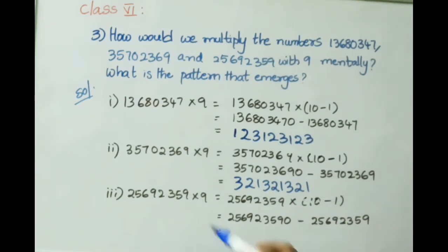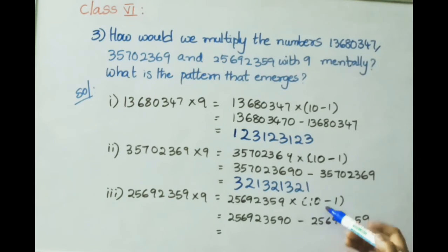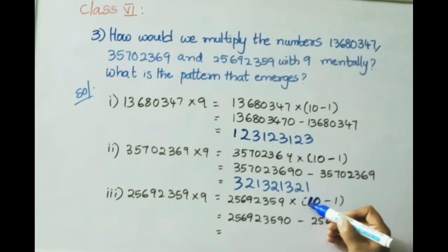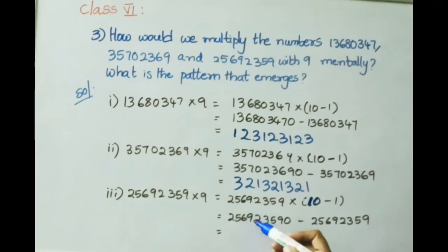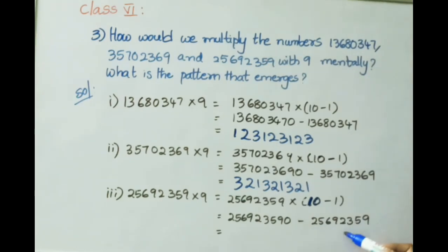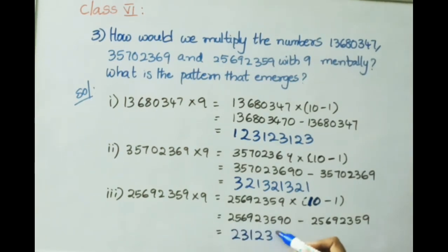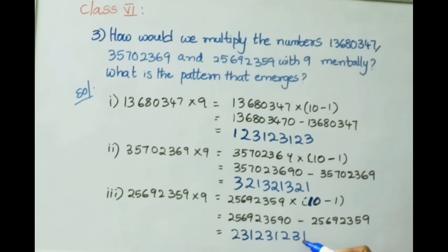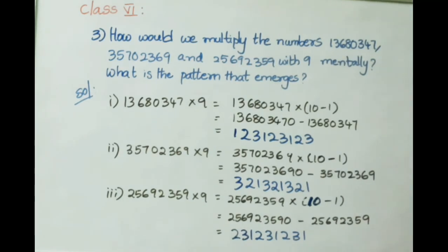For 2 crore 56 lakh 92,359 multiplied by 9: write 9 as 10 minus 1. Multiply by 10 to get 25 crore 69 lakh 23,590, then subtract 2 crore 56 lakh 92,359. The answer is 23 crore 12 lakh 31,231.